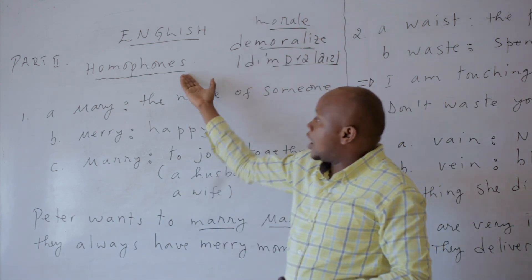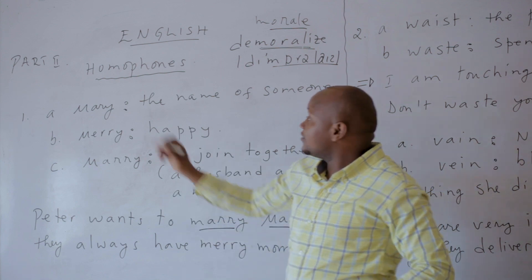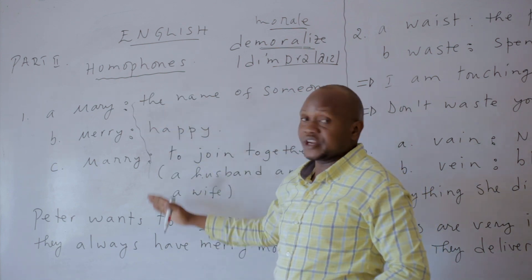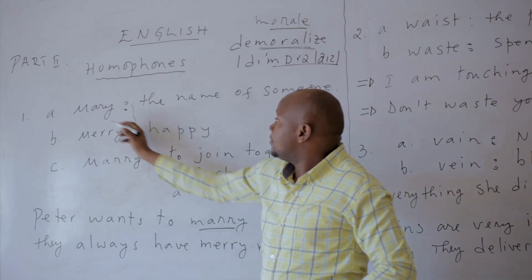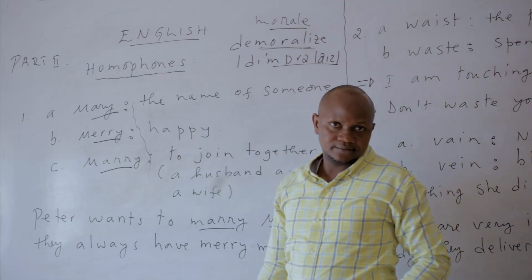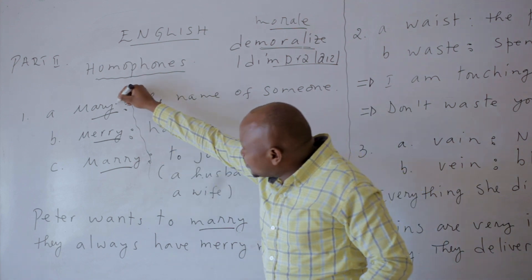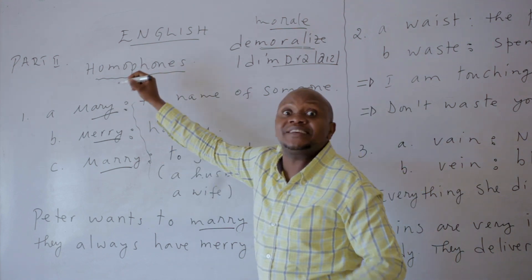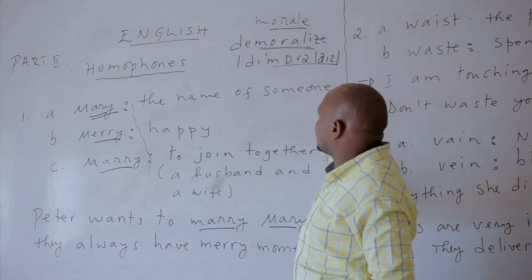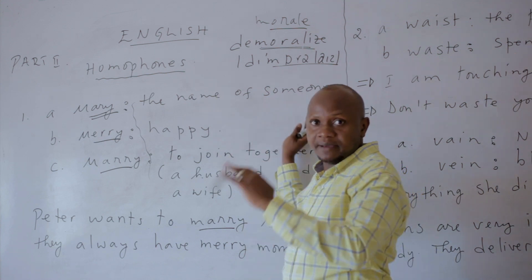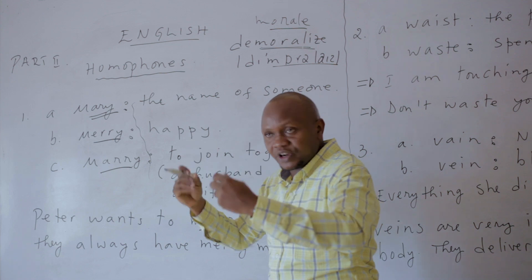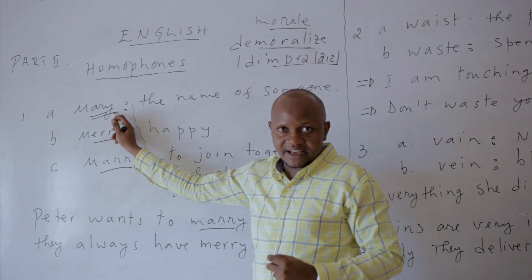Then, homophones. We have three homophones here: Mary, Merry, Marry. First, 'Mary' — this is the name of someone, a female name, like Maria.